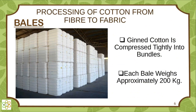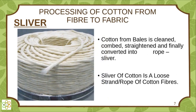In diamond bales, clean cotton is compressed tightly in bundles, each bale weighing approximately 200 kg. Processing of cotton from fiber to fabric begins with the sliver stage — cotton from bales is cleaned, combed, straightened, and fleshed, and finally converted into a rope called sliver. A sliver of cotton is a loose strand rope of cotton fibers.